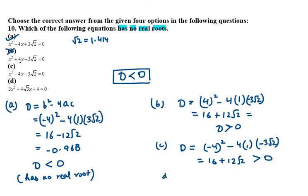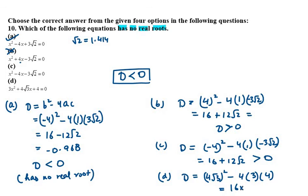For option D, the equation is 3x² + 4√3x + 4. D equals b² - 4ac, where b is 4√3, a is 3, and c is 4. So (4√3)² equals 16 × 3 = 48, minus 4 × 3 × 4 = 48. So 48 - 48 equals 0. When D equals 0, the equation has two real and equal roots, so option D is also cancelled out.